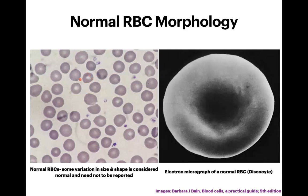This image shows normocytic RBCs where the central pale area is less than one third. This is an electron micrograph of the normal RBC called a discocyte — a biconcave cell where hemoglobin is on the periphery and the central area appears pale.